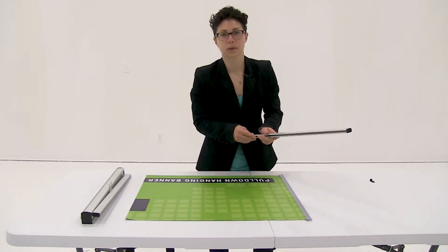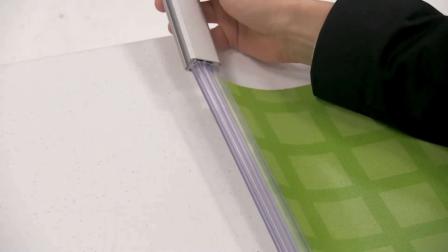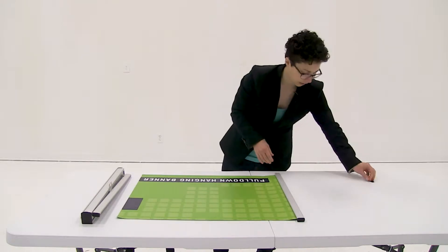Then slide the silver rail over the clear snap rail and replace your end cap.